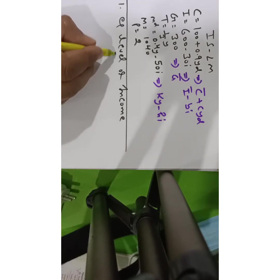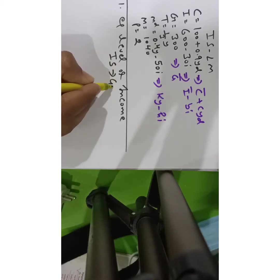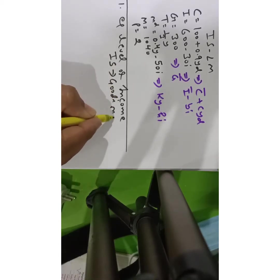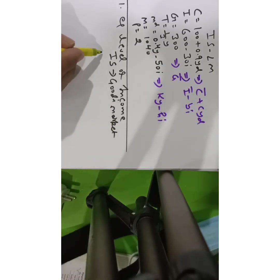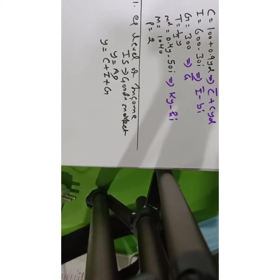The steps to solve that equilibrium income start with first solving for IS. We all know that IS stands for goods market equilibrium. Goods market equilibrium occurs where Y equals AD — aggregate demand — or you can say Y equals C plus I plus G.